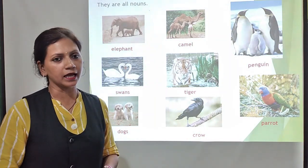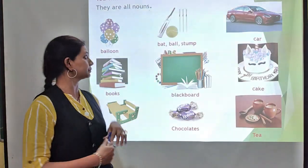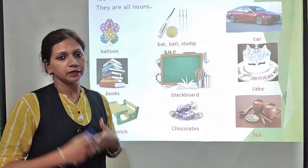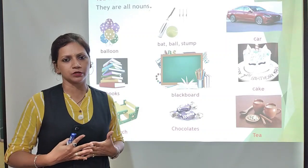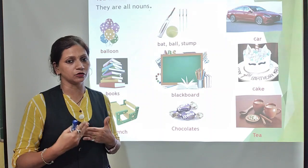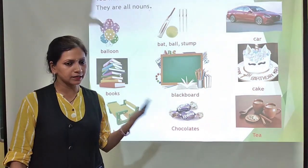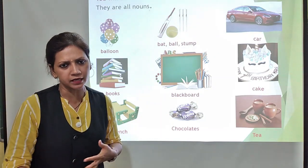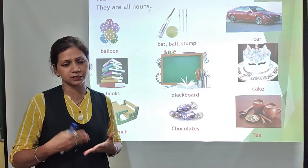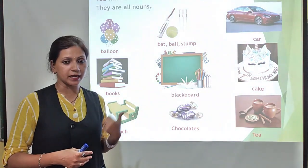Now the last category is things. There are so many things around us with particular names. Examples include: balloon, bag, ball, car, tea, coffee, milk. In the classroom there are things like blackboard, chalk, table, and chair. These are also naming words.